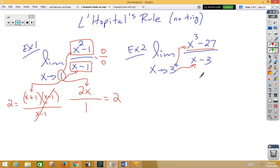So, our derivative of the top would be 3x squared. Derivative of the bottom would be 1. Plug in the 3, and we get 27.